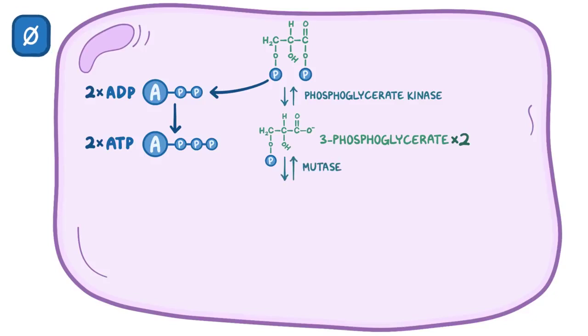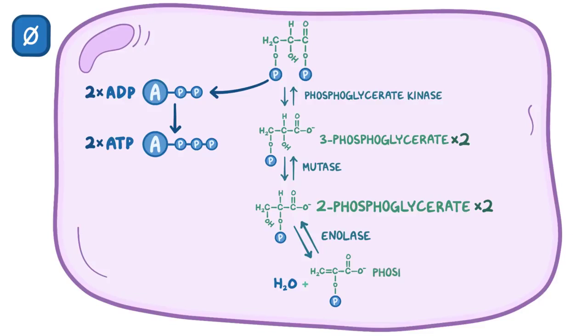Next, an enzyme called a mutase moves the phosphate on 3-phosphoglycerate to the second carbon, making 2-phosphoglycerate. After that, an enzyme called enolase removes a water molecule from 2-phosphoglycerate and makes phosphoenolpyruvate, or PEP.